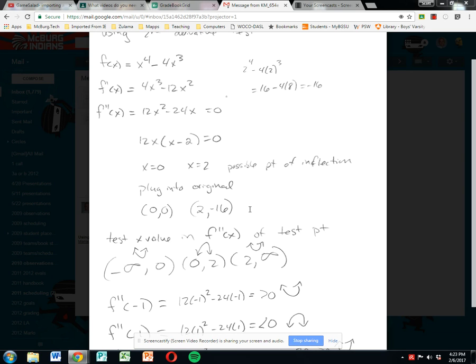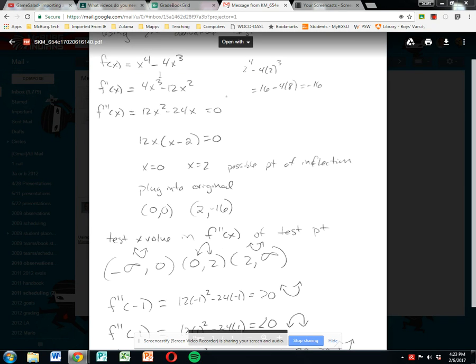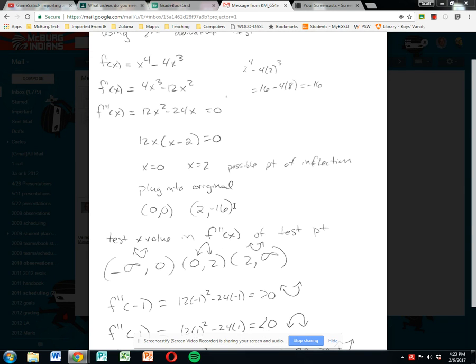These are x values. If I want the y value associated with those, I have to plug these back into the original equation up here. Zero gave me zero and two, you can see my side work over here, gave me negative 16. So these are the actual points on the graph of possible points of inflection.